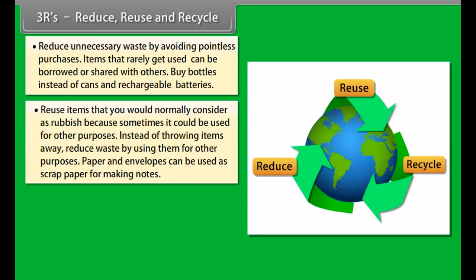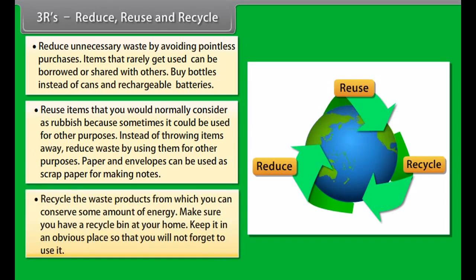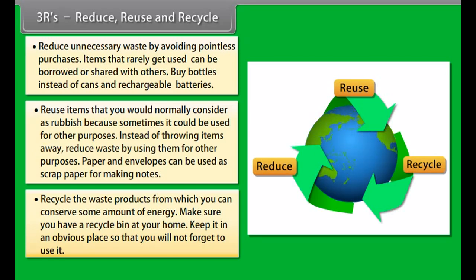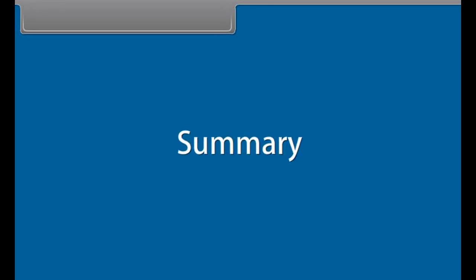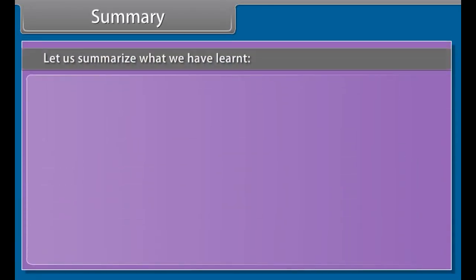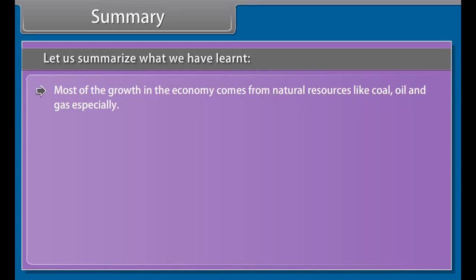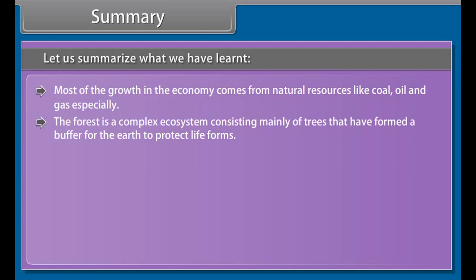Petroleum is found in porous rock formations in the upper strata of some areas of the Earth's crust. Known reserves of petroleum are typically estimated at around 1.2 trillion barrels, with at least one estimate as high as 3.74 trillion barrels. Consumption is currently around 84 million barrels per day or 31 billion barrels per year. Because of reservoir engineering difficulties, recoverable oil reserves are significantly less than total oil in place. At current consumption levels, known reserves would be gone in about 32 years, around 2039.